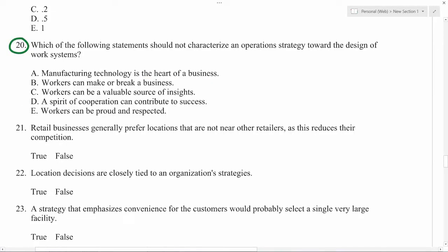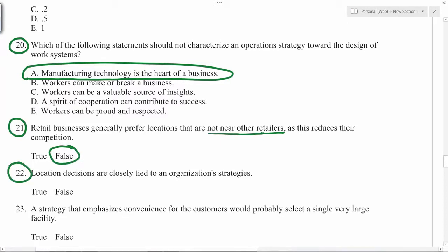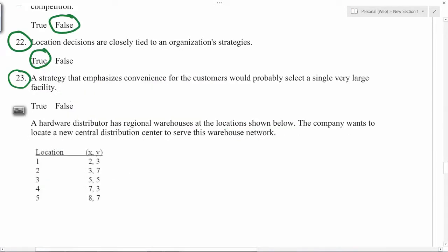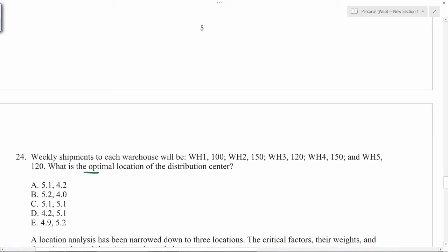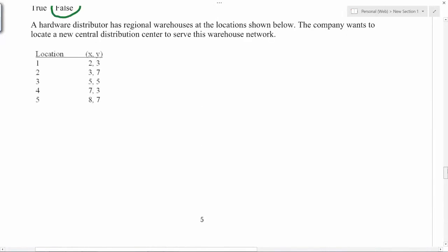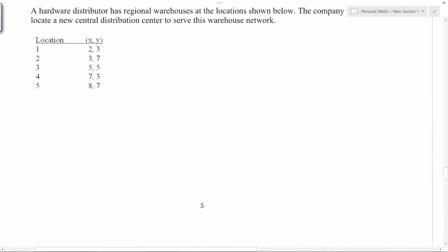Which of the following statements should not characterize an operations strategy? So it should be A. Location decisions are closely tied to organization's strategies - that's false actually. Customers are everywhere. If you really want to be near the customers, you cannot depend on just one very large facility. What is the optimal location? Because we are given the shipments as well as the coordinates of the location, we have to do weighted average.